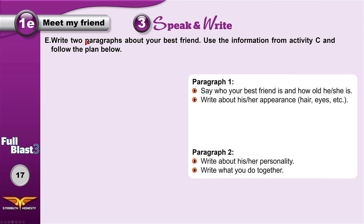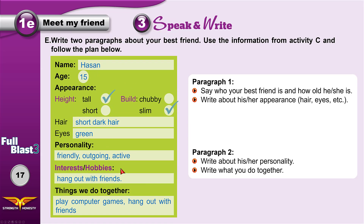Now write two paragraphs about your best friend. Use the information from activity C and follow the plan. In paragraph one: say who your best friend is — name, age, appearance, hair, eyes. In paragraph two: write about their personality — if they are active, outgoing — and the things that you do together.